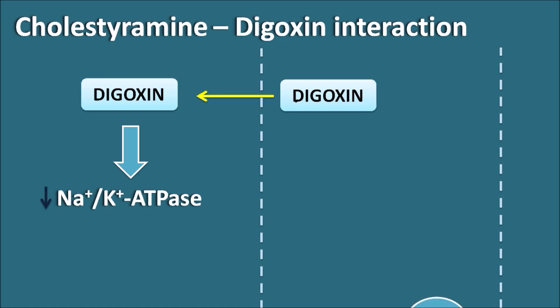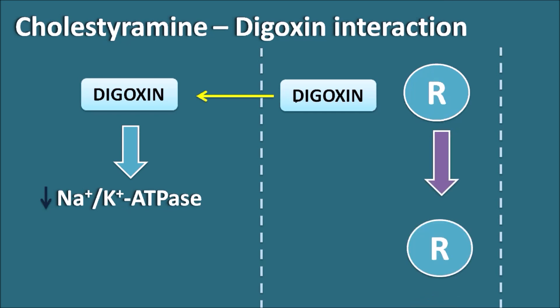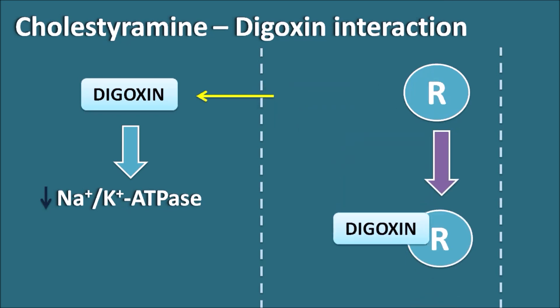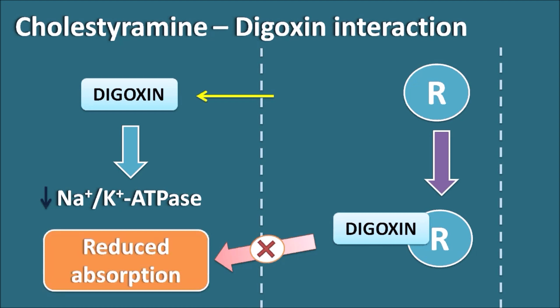When digoxin is given along with cholestyramine resin, in the presence of cholestyramine, digoxin can form a complex similar to the one formed with bile acids. This complex is non-absorbable, which results in reduced absorption of digoxin and decreases its bioavailability.